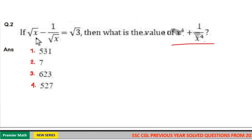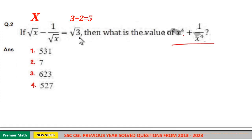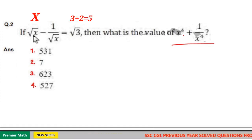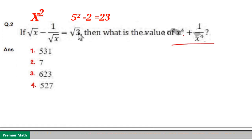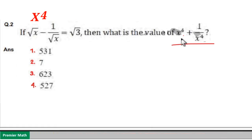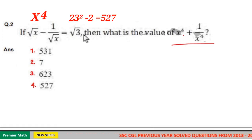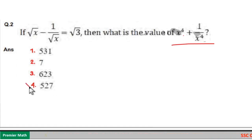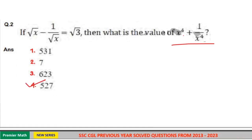When you square root x, it will become x. Then the RHS will become 3 plus 2, which is 5. Again when you square x, it will become x square, and the RHS will become 5 square minus 2, which is 23. Again when you square x square, it will become x raise to 4, and the RHS will become 23 square minus 2, that is 529 minus 2, equal to 527. Option 4 is your answer.